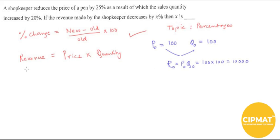Now there is a change in price. Price at a later time, P₁, will be 25% less than what it was, so it should be 75. And the quantity at later time, Q₁, is increased by 20, so Q₁ will be 120.